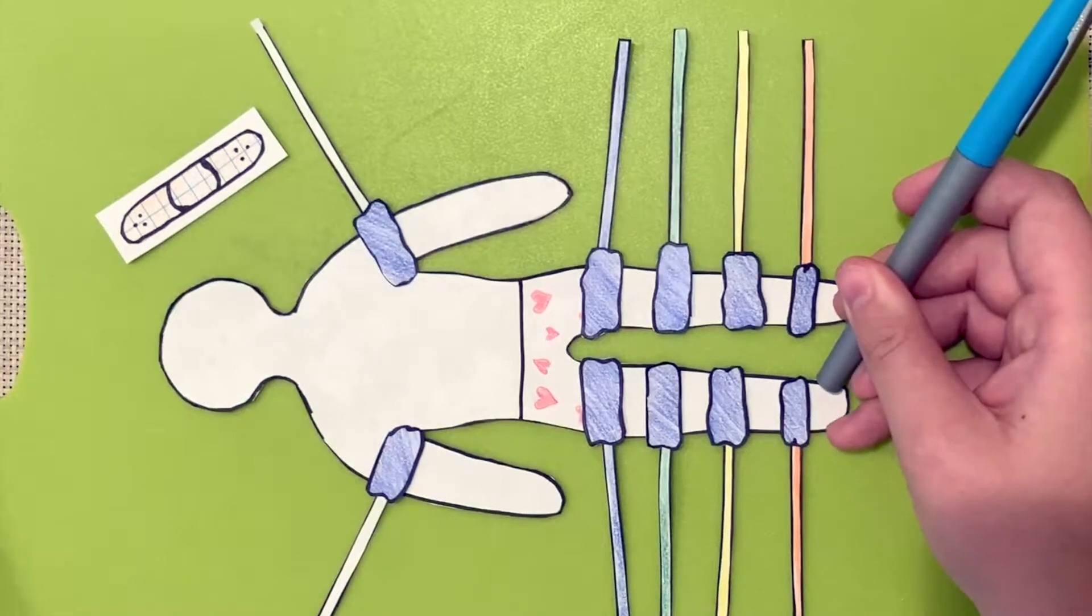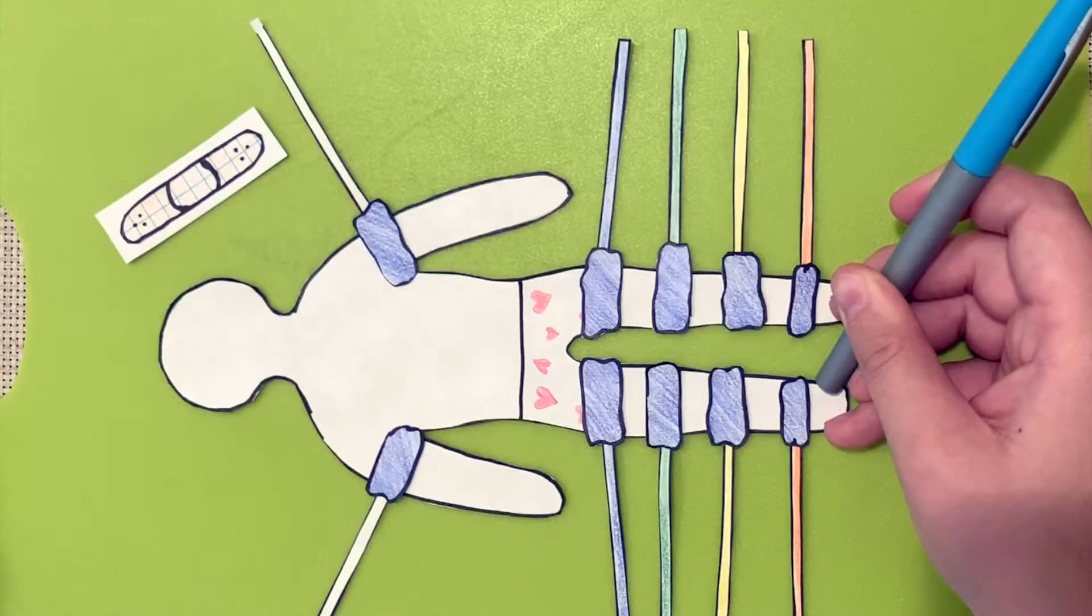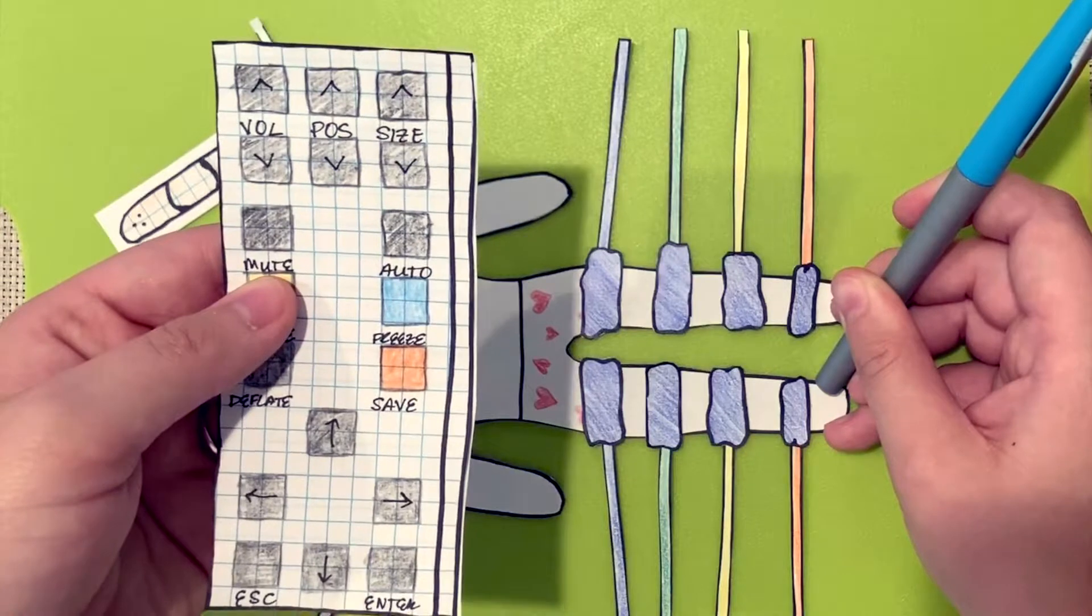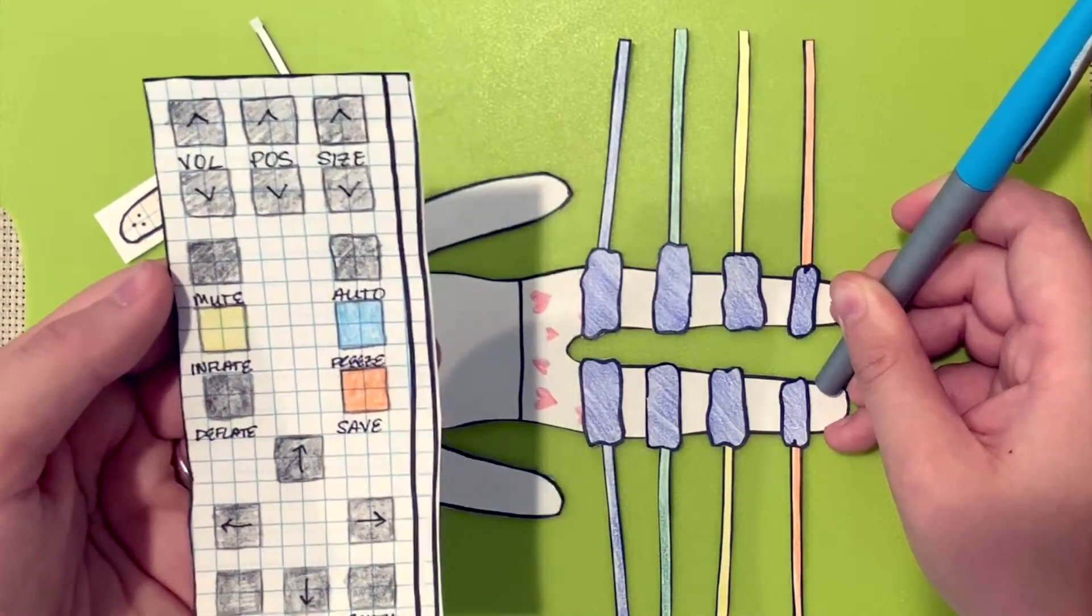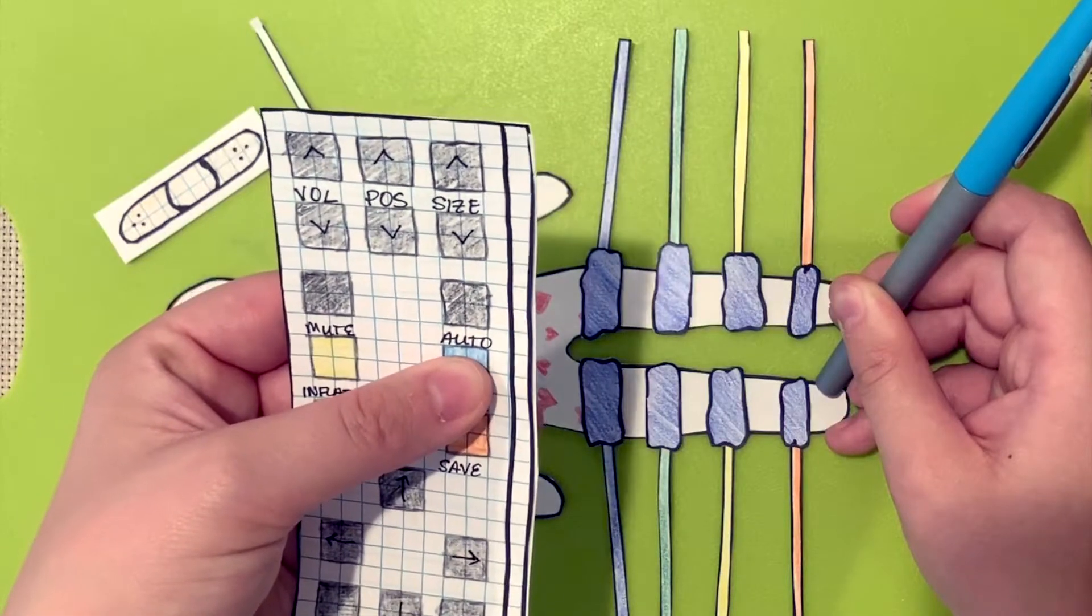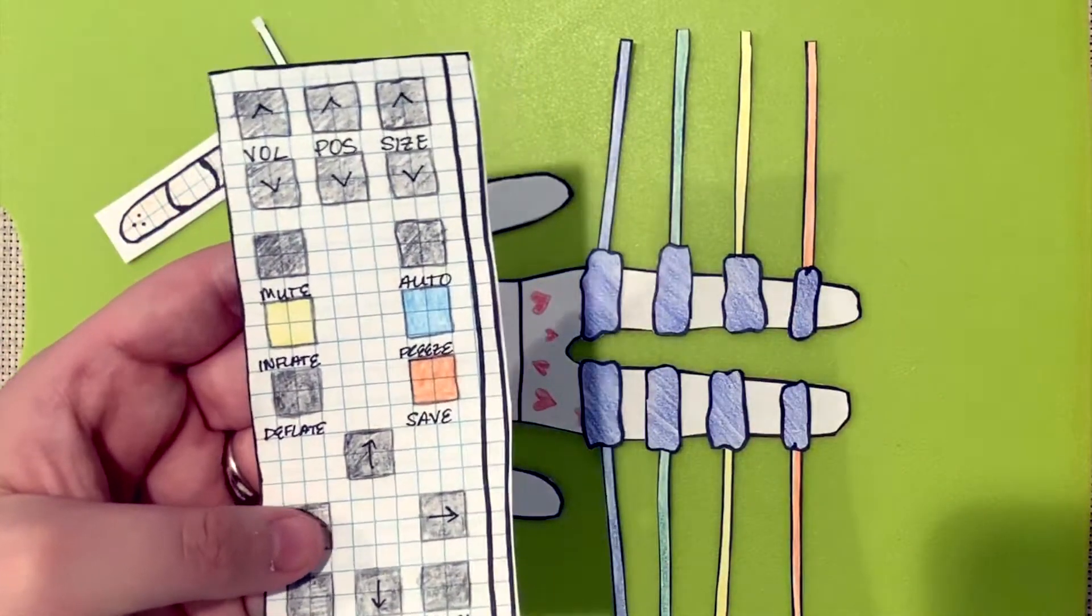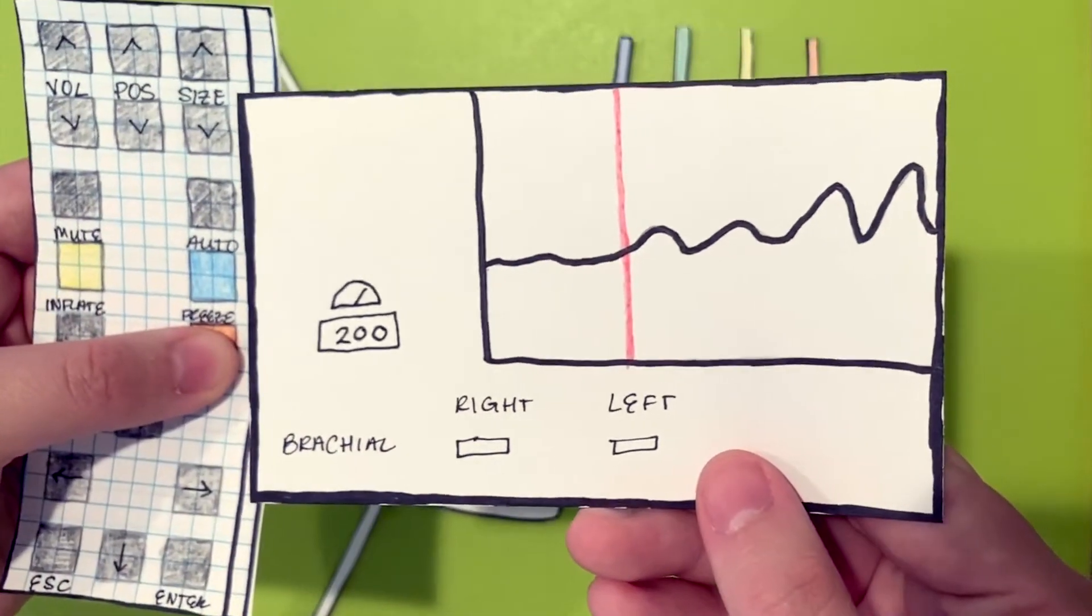After locating a strong signal at the posterior tibial artery, you will use the remote to inflate the cuff. Hold the inflate button until the signal is gone and then release. The cuff will bleed back on its own until the signal returns. Freeze the frame and quickly deflate the cuff. You will then scroll back to the first pulse and acquire that pressure with the save button on the remote.